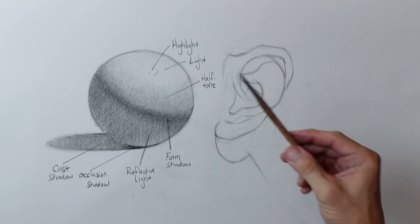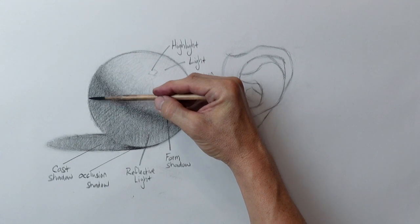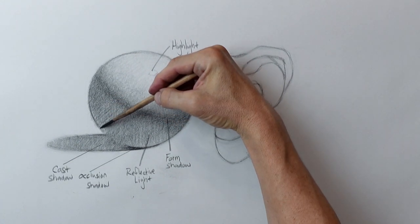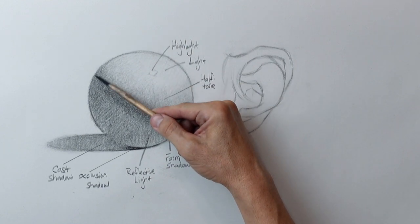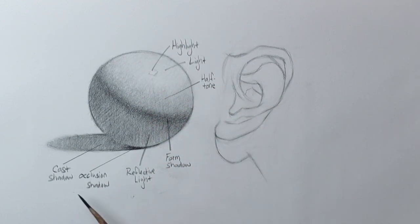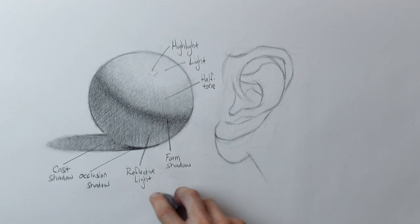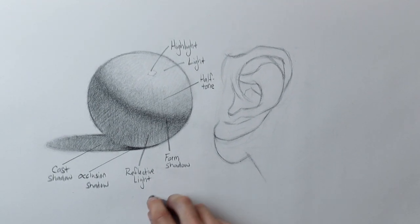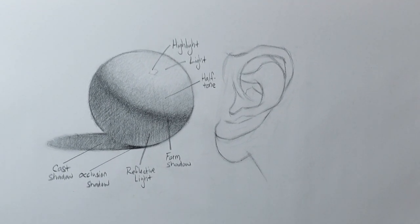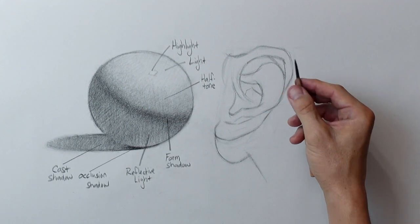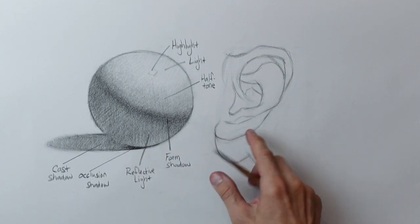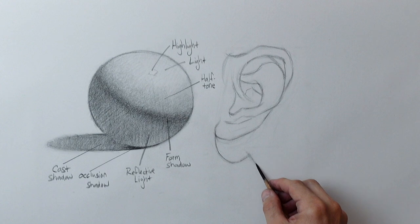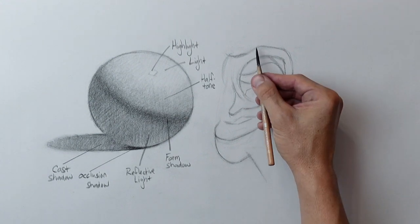Okay, so now I'm going to come over to the ear and work our magic on it with some shading, thinking about these different kinds of light and shadow, and work our way around the ear. Let's start off with finding those form shadows. We pretty much have it mapped out — we have most of the cast shadows, but we didn't do the form shadows yet.